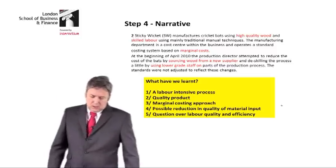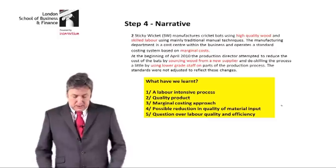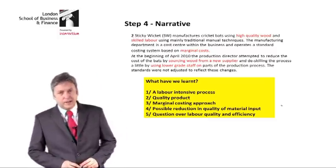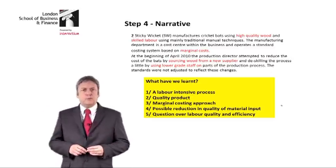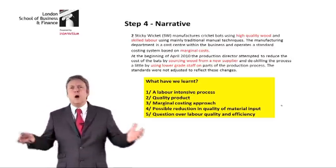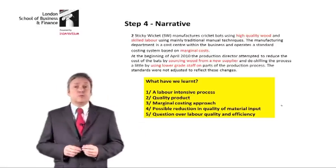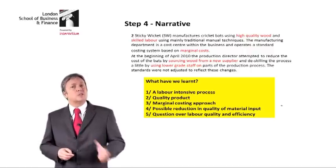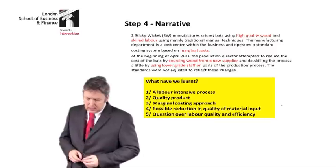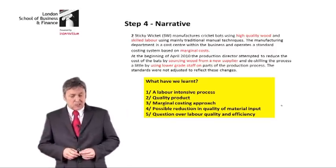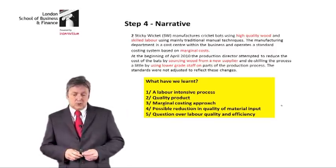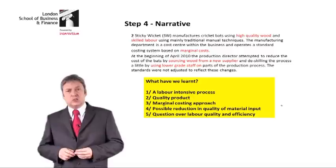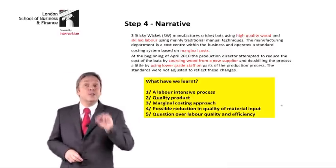Reading on. At the beginning of April 2010, the production director attempted to reduce costs by sourcing wood from a new supplier. If we're going to source material from a new supplier, why would it be cheaper? The obvious reason is because it's of a lower quality — that is the emphasis the examiner is trying to give us. Reading on: de-skilling the process by using lower-grade staff on parts of the production process. The standards were not adjusted to reflect these changes and therefore will be reflected in the variances.